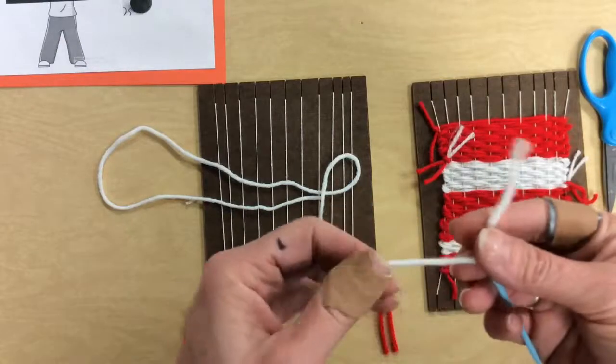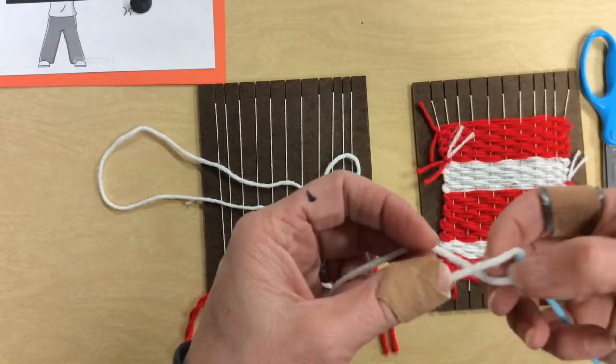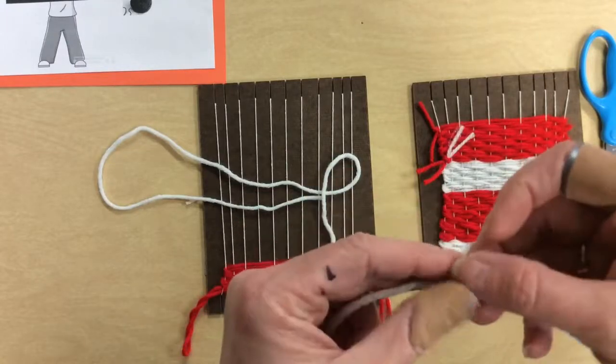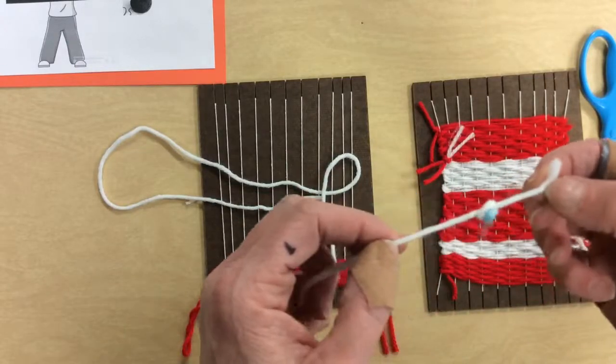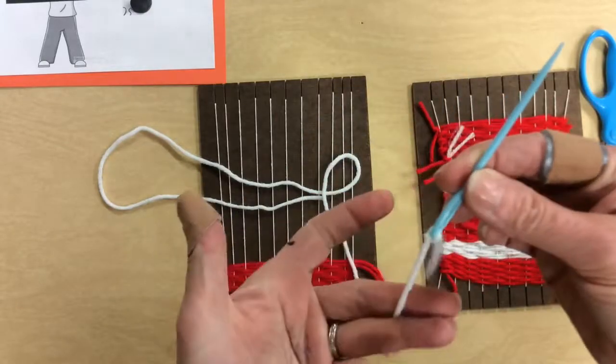If you don't know how to do this, this is something you need to practice. This is a good skill. It just goes over it and through it. Then you pull it through. I'm not going to double knot it because I'm going to have to take the yarn off.